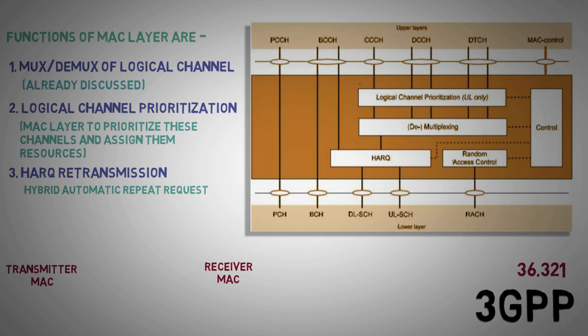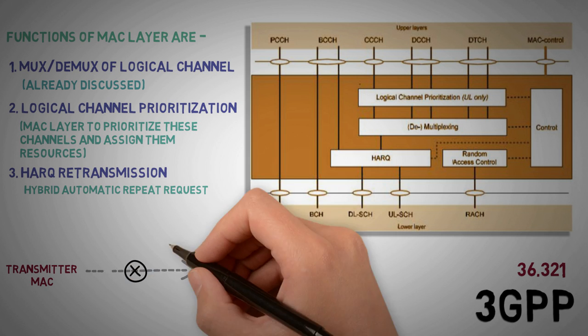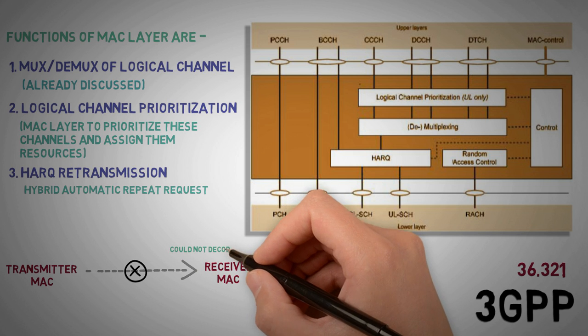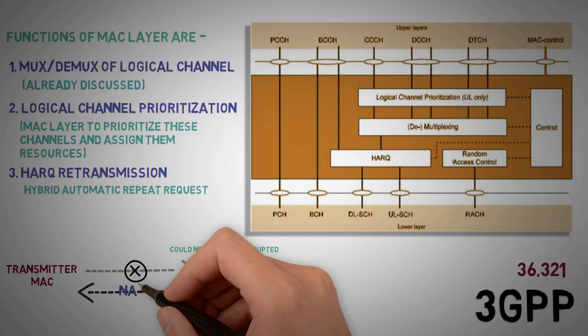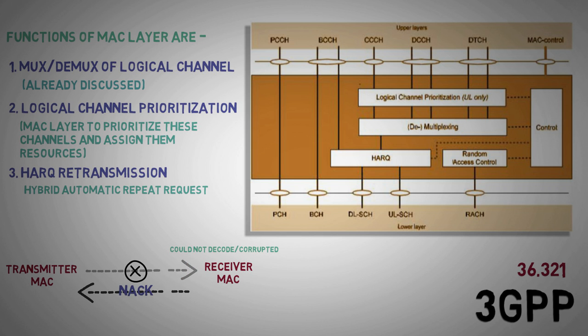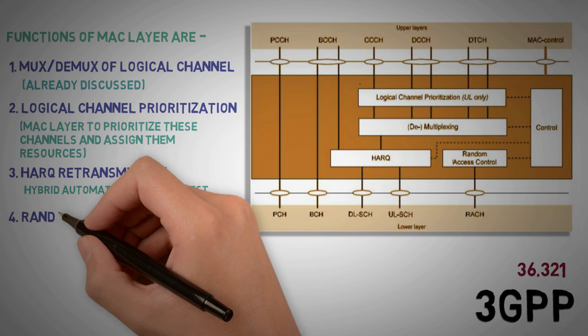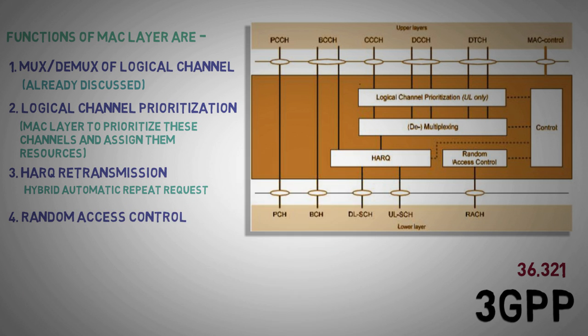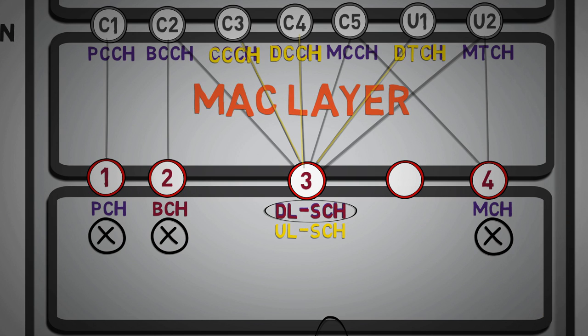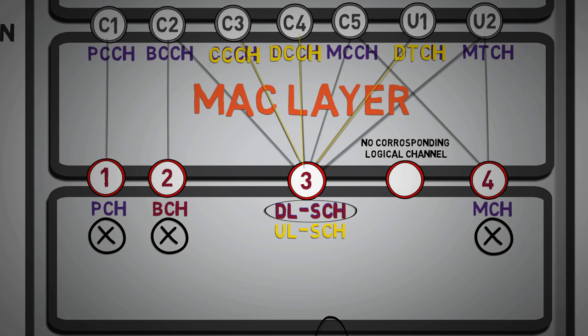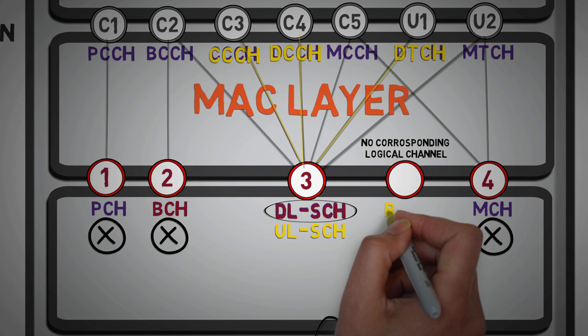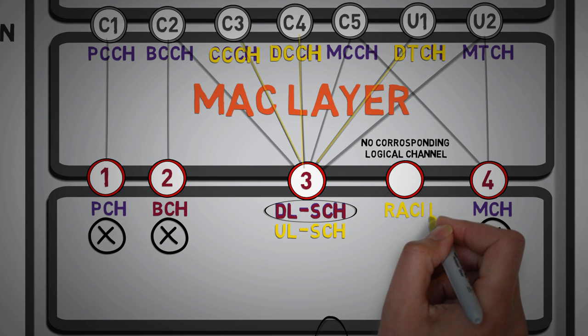If somehow the receiver's MAC layer could not decode the data or the decoded data was found to be corrupted, then the receiver's MAC layer will send negative acknowledgement, based on that the transmitter's MAC layer will have to retransmit. 4. Random access control. As told earlier the random access channel is the only transport layer channel that doesn't have any logical channel. RACH process is solely taken care by MAC layer.